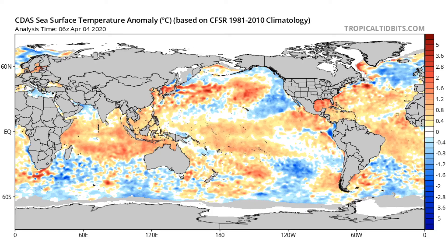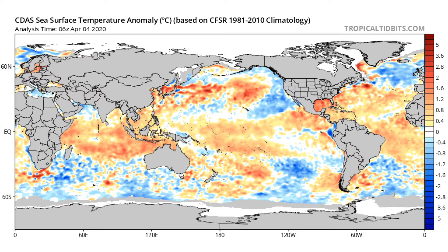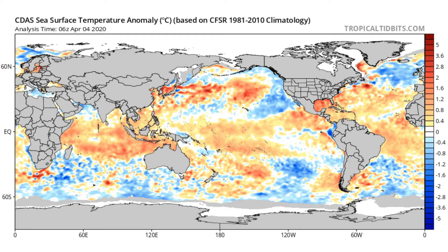Something very important for hurricane development is your ENSO pattern. You may have heard of the terms El Niño, La Niña, or a neutral pattern. We look to be going into a La Niña, which is important because it produces very little wind shear over the main development region. We can detect La Niña by looking at sea surface temperatures off the coast of South America — more blue in that region indicates La Niña. It looks to be a weak to moderate La Niña, which would significantly hinder wind shear across the Gulf of Mexico, the Caribbean, and the Atlantic.